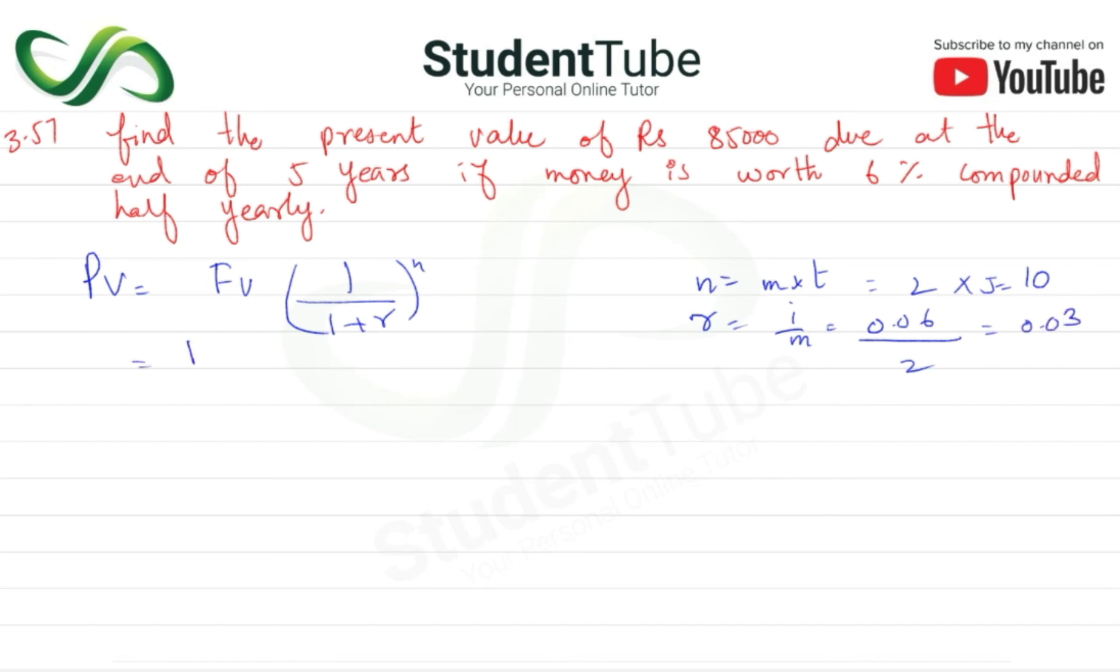kya jayega? 85,000, 1 upon (1 + 0.03), aur n jo hai wo ho jayega 10. So 85,000 × 1/(1.03)^10.